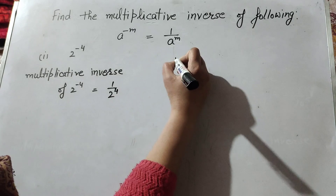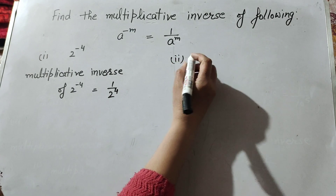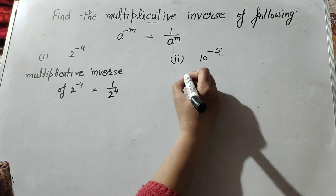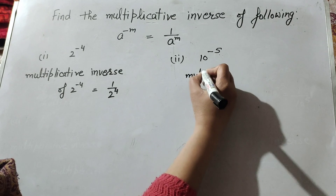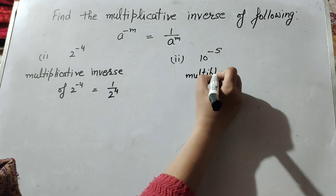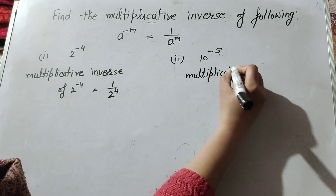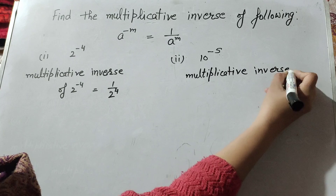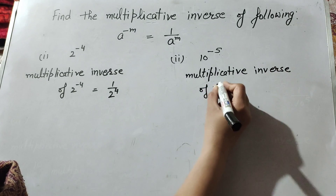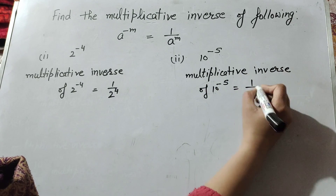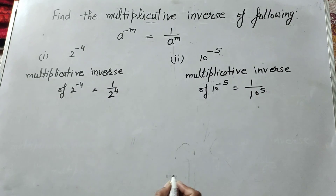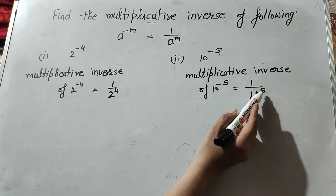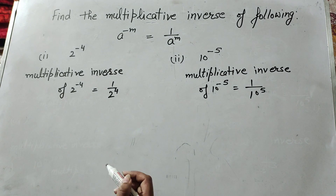Now we move to the second part: 10 raised to power minus 5. The multiplicative inverse of 10 raised to power minus 5 is equal to 1 over 10 raised to power 5. When 10 raised to power minus 5 is multiplied by 10 raised to power 5, we get the answer one.